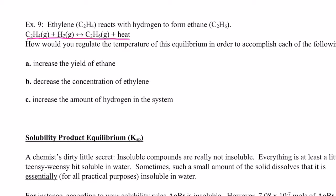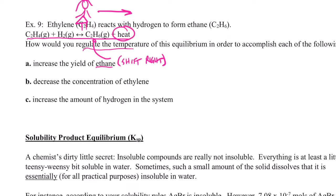Welcome back. For part a, we want to increase the yield of ethane (C₂H₆), which is on the right-hand side, so we want to shift right. Heat is on the right-hand side of this exothermic reaction. The little girl needs to move toward the heat, so we decrease the temperature — making it colder causes her to shift toward the heat, which is to the right.